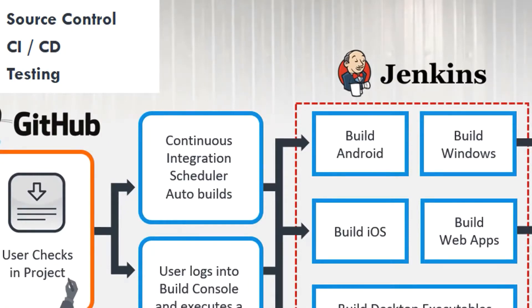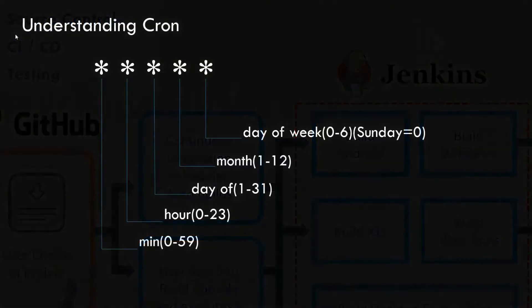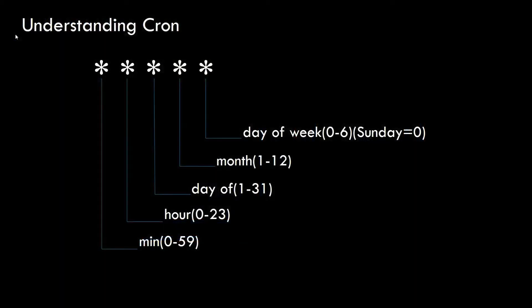Before we look in detail at scheduling, let's have a quick review of cron. Cron scheduling is a familiar scheduling mechanism used by Unix admins to plan jobs that need to run in a Unix environment. Cron takes five parameters that are highly configurable to meet your scheduling needs. The following diagram illustrates the syntax.